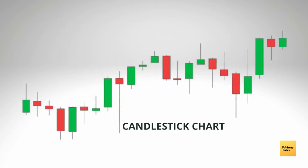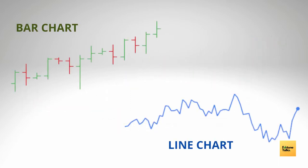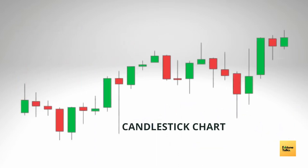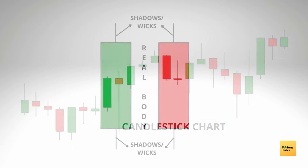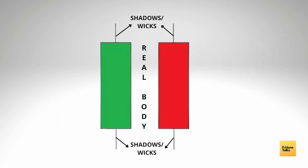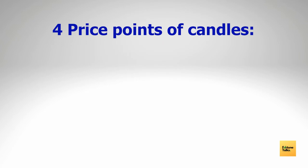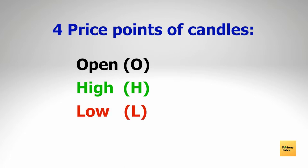Candlesticks are a way to show the market prices of a security on your chart. It's not the only way — we have other ways like bar charts, line charts, etc. — but candlesticks are one of the more popular approaches. The candlestick usually consists of two parts: a real body and shadows or wicks. When dealing with candlesticks you must be aware that there are four price points for every candle on the chart.